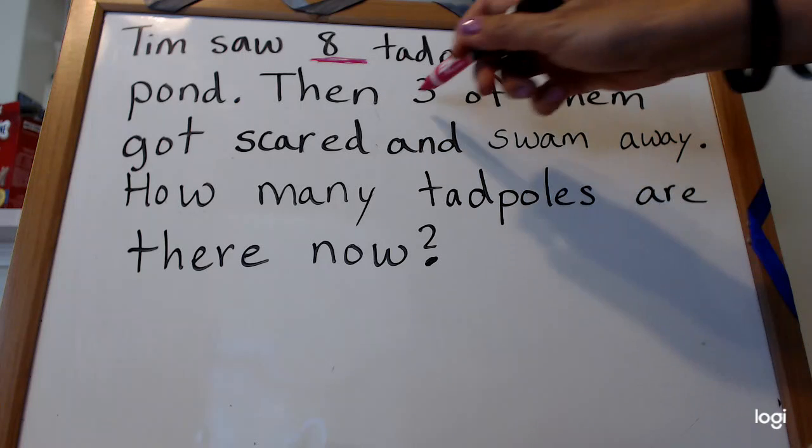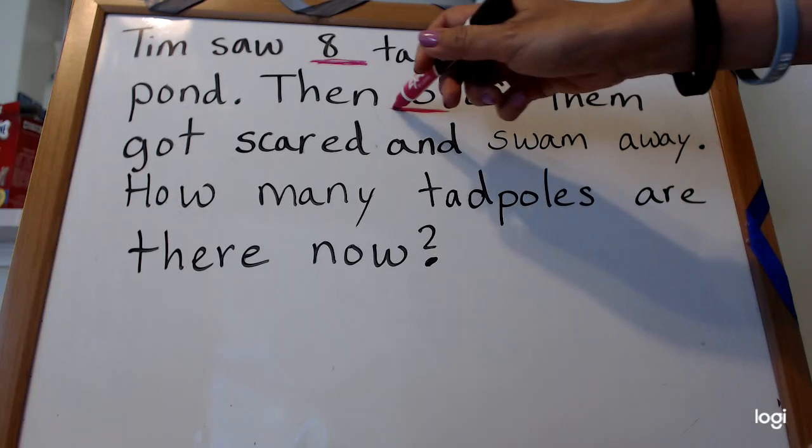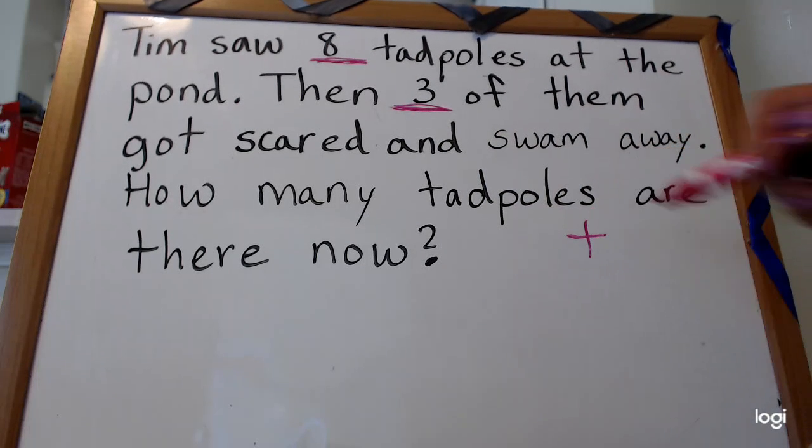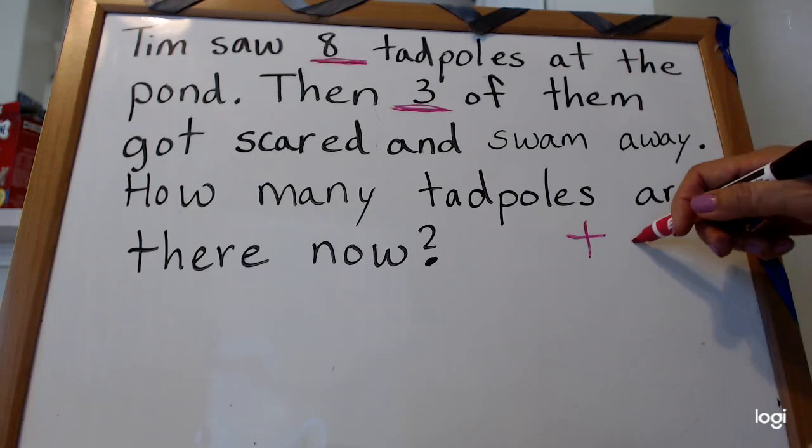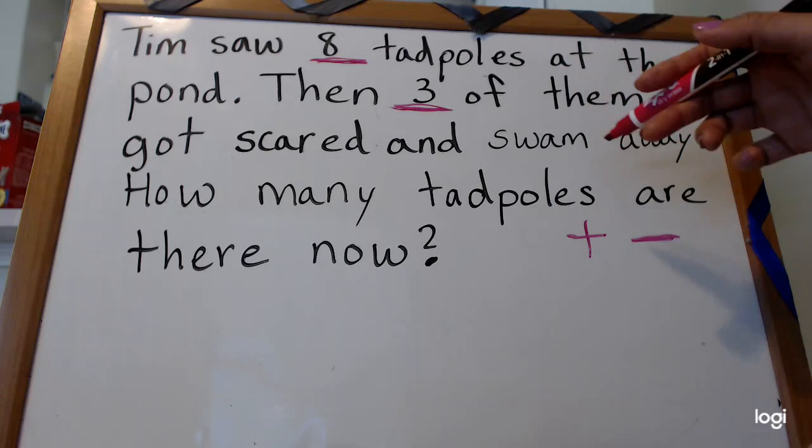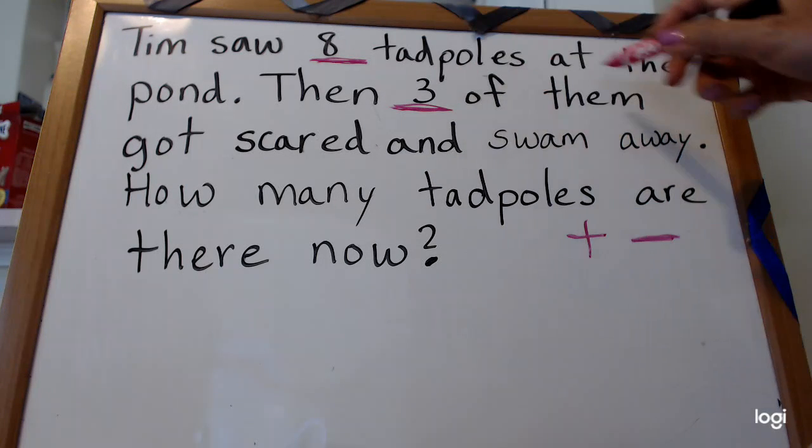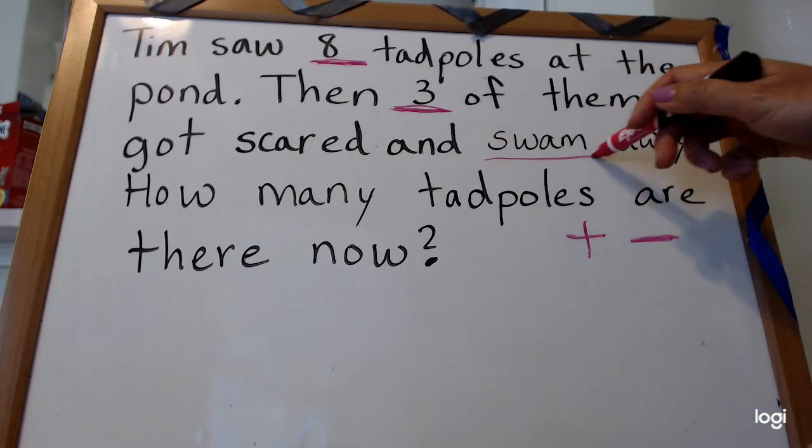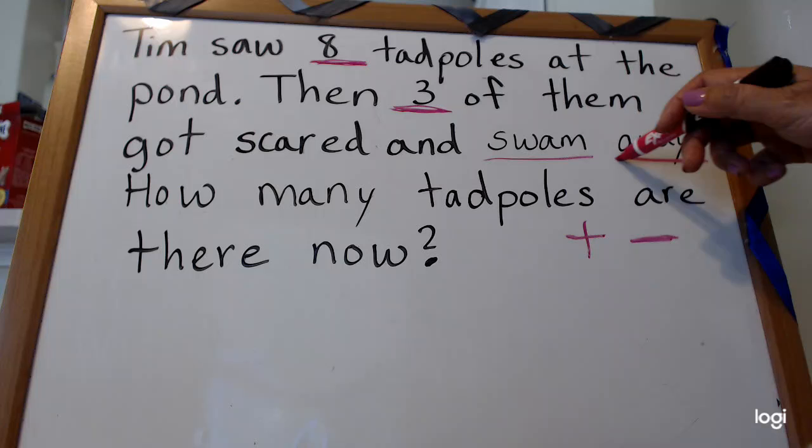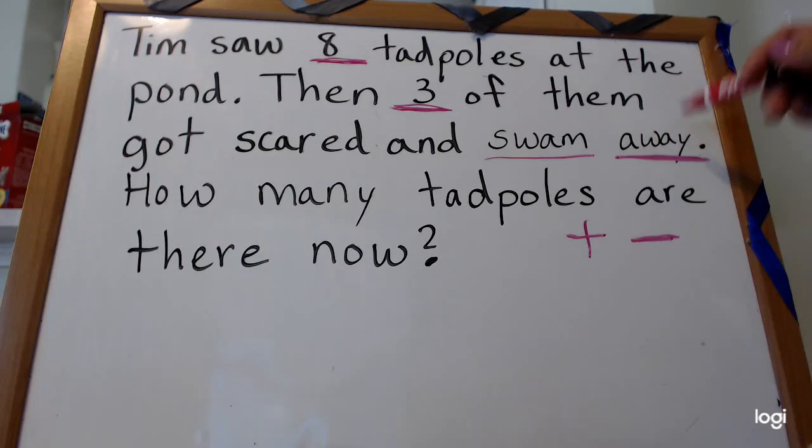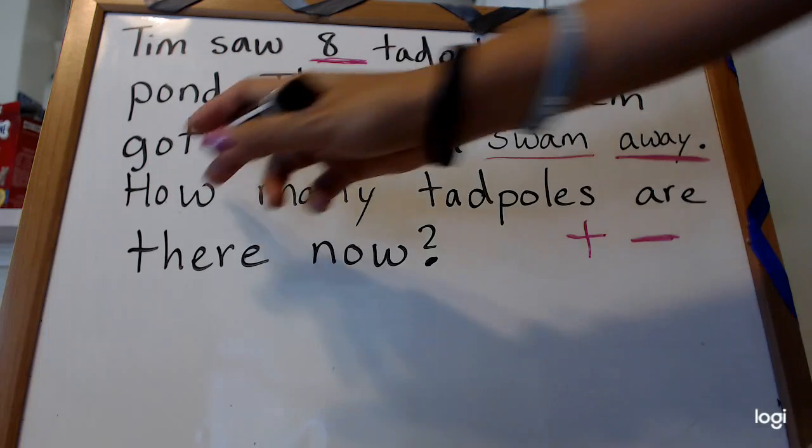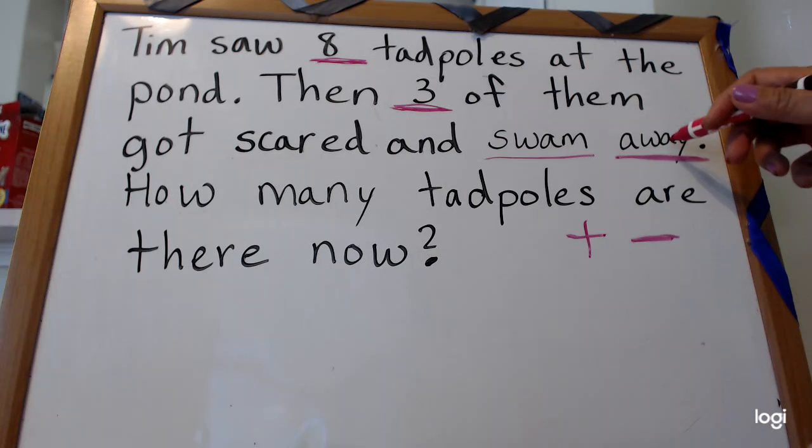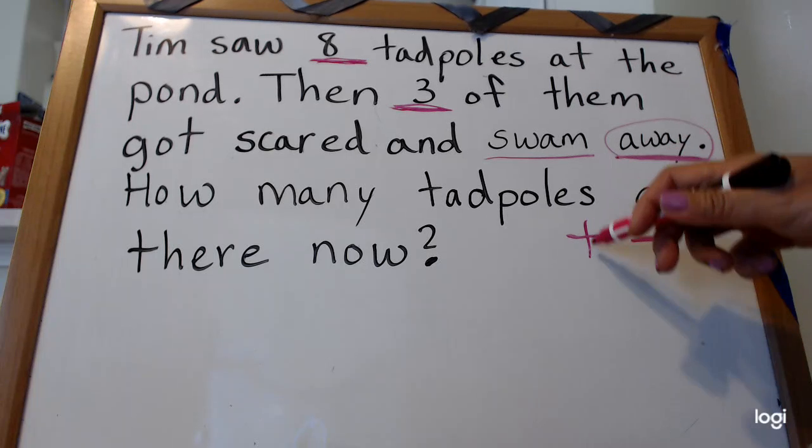Then three of them, three is important, but we also need keywords to let us know is it going to be a plus problem or a minus problem, so we have to look for the keyword. Then three of them got scared and swam away. They swam away. See this word away? That's like giving it away. That word away gives me an idea that it is not going to be a plus problem but it's going to be a minus problem.